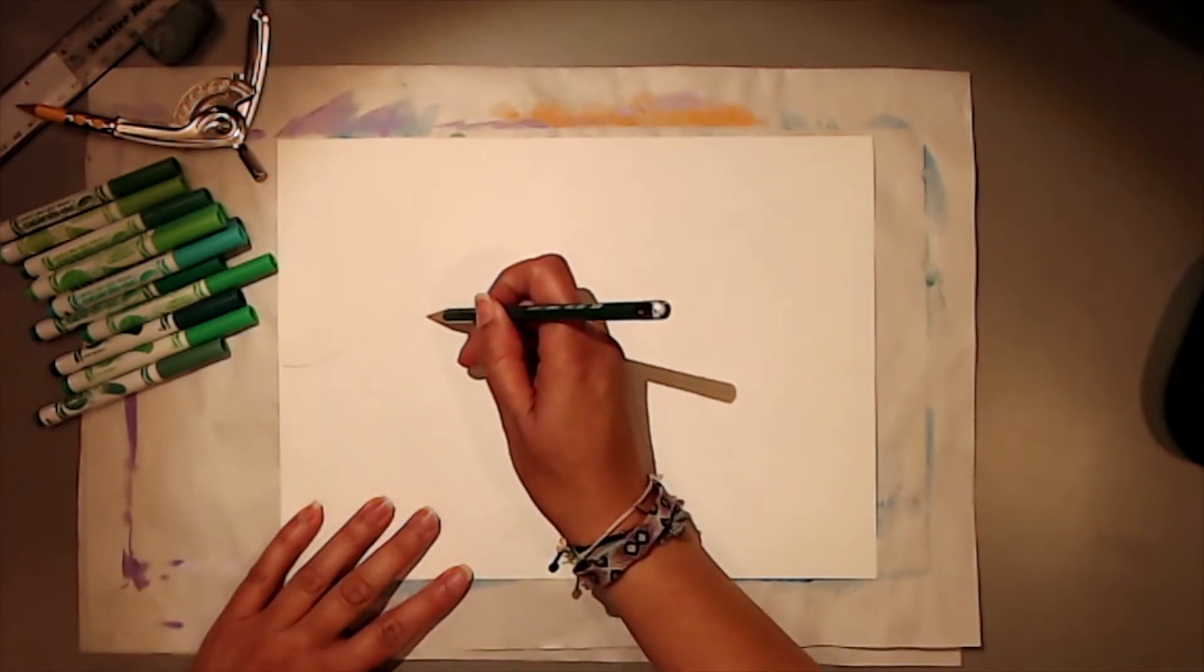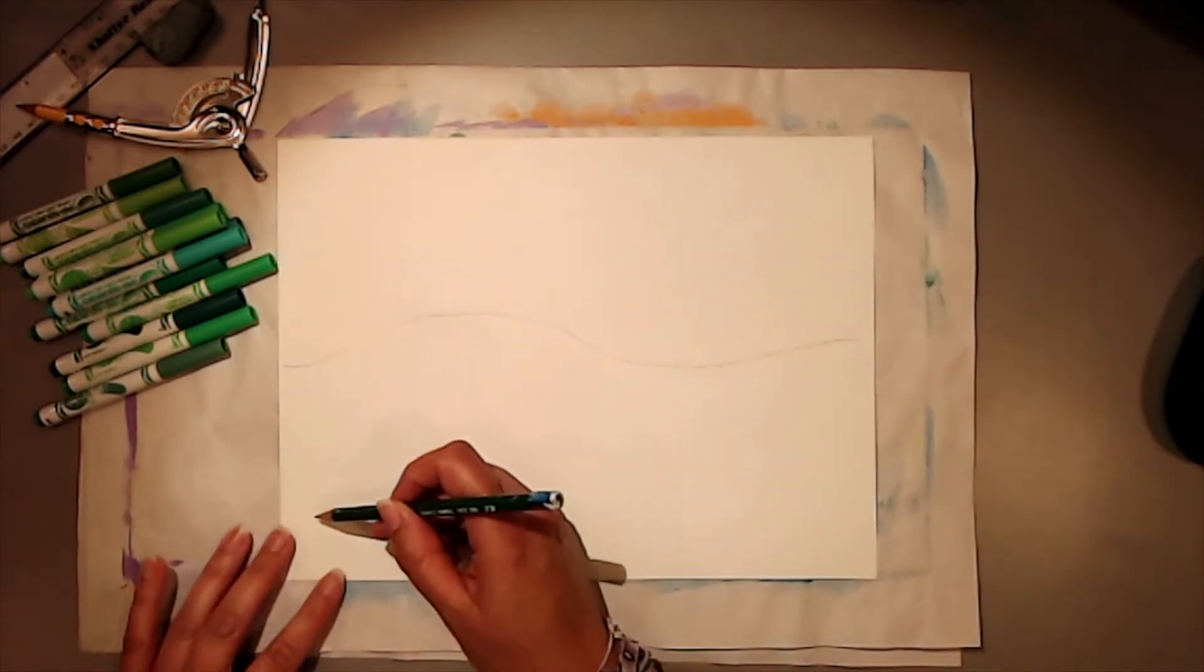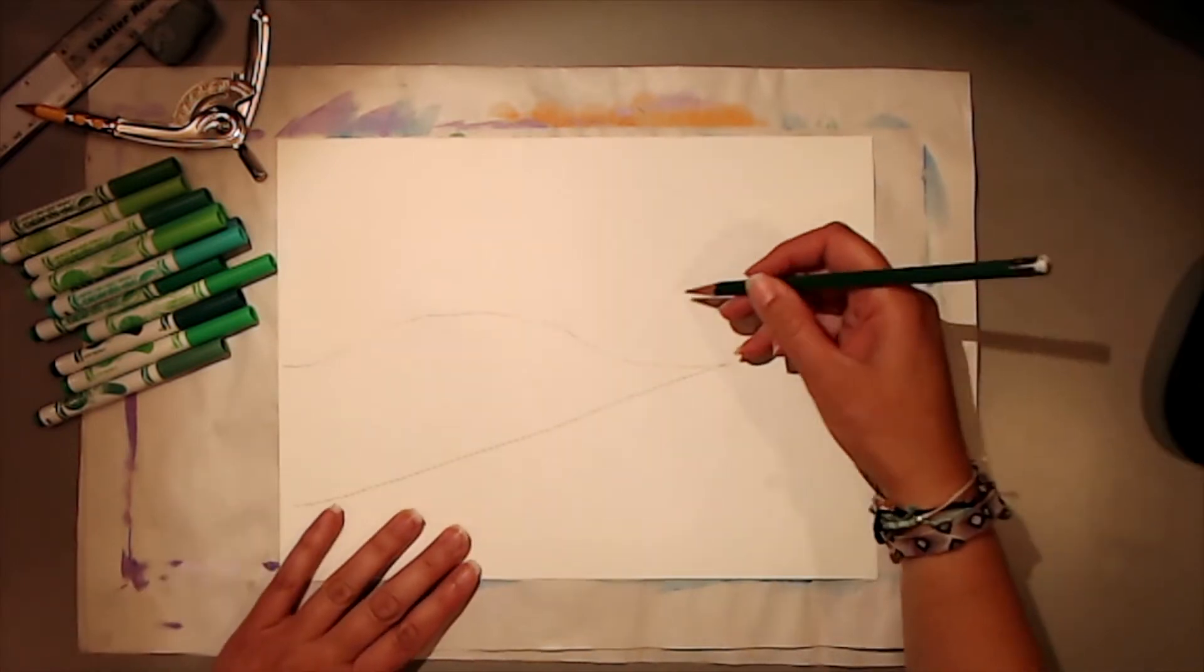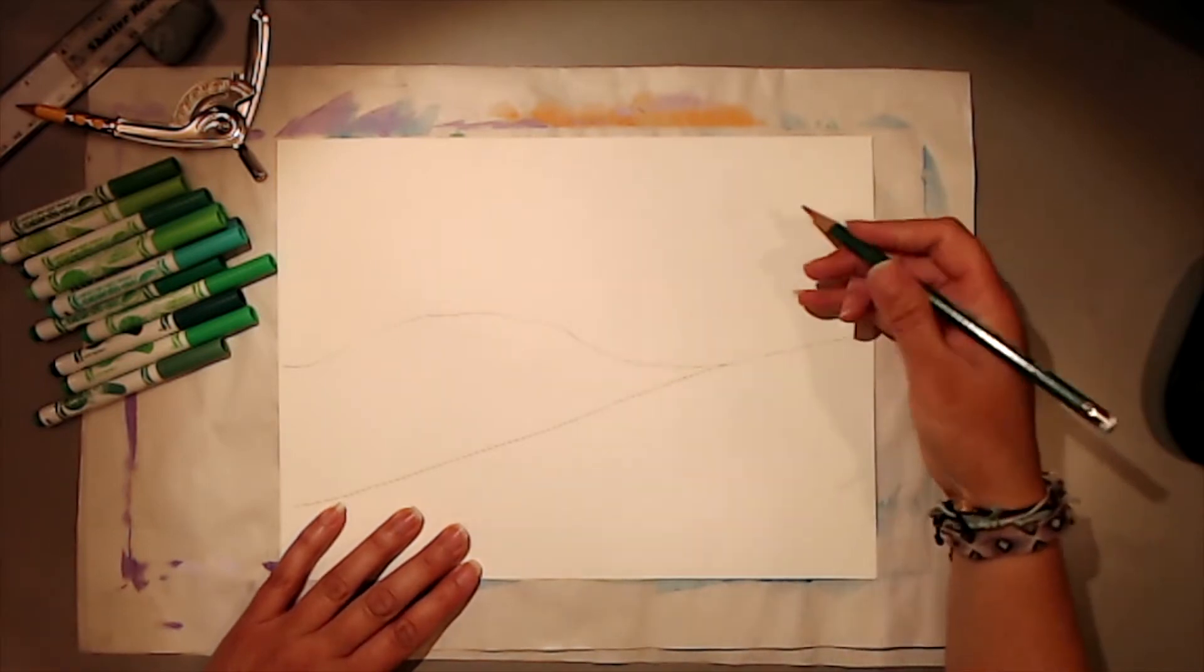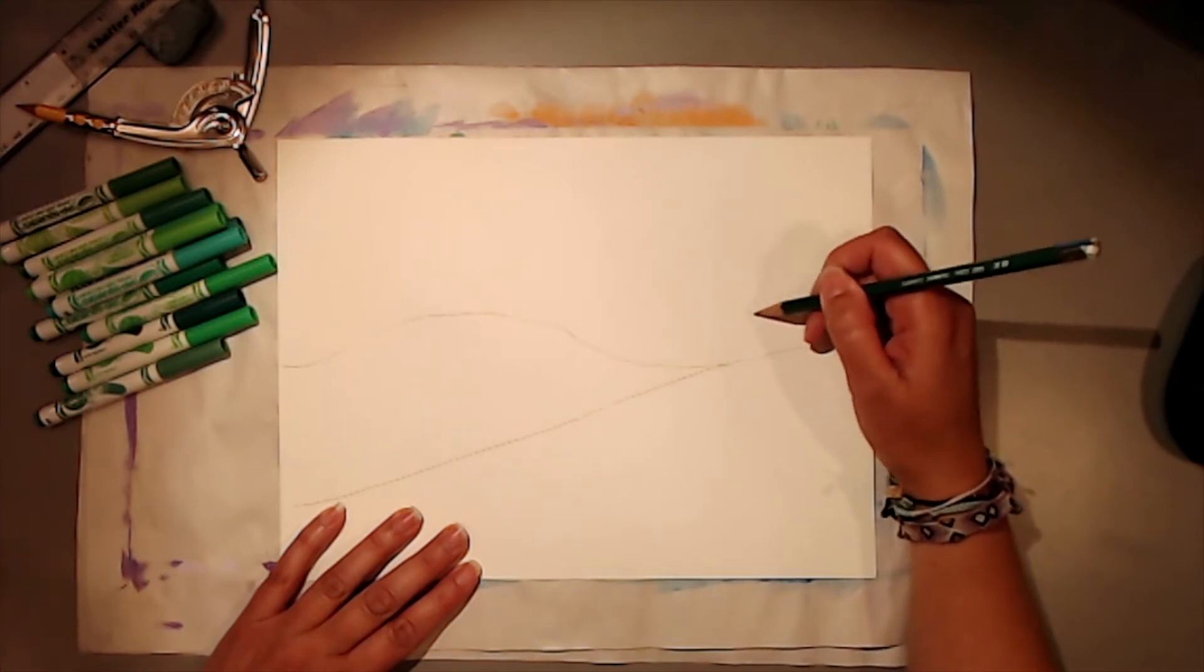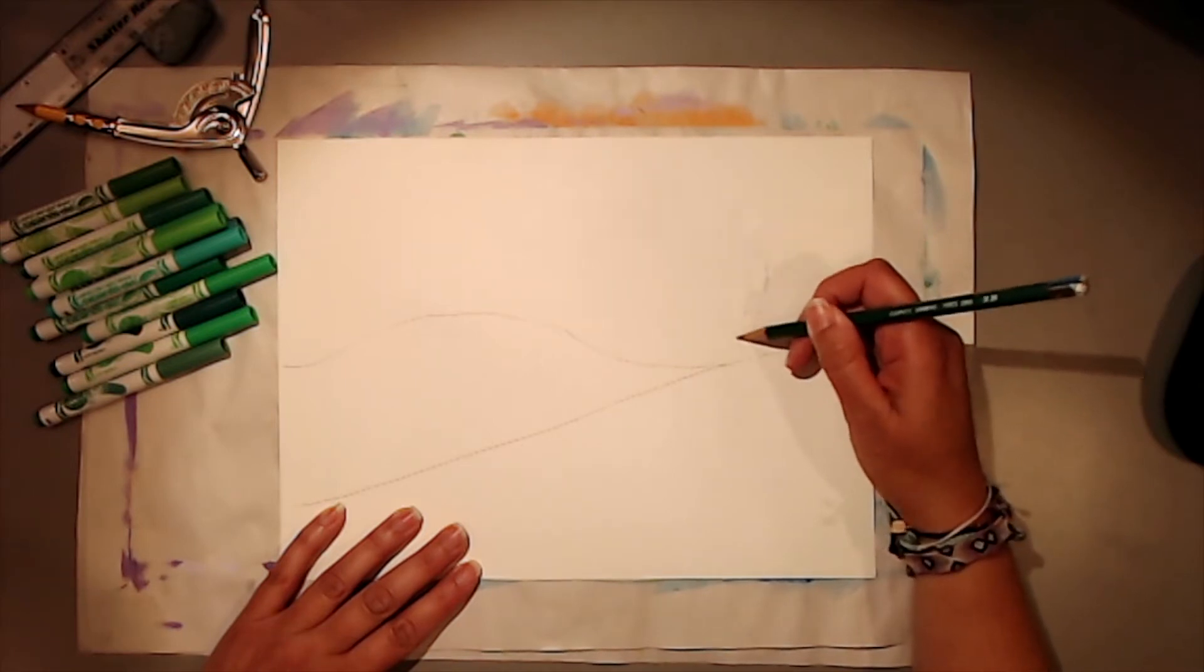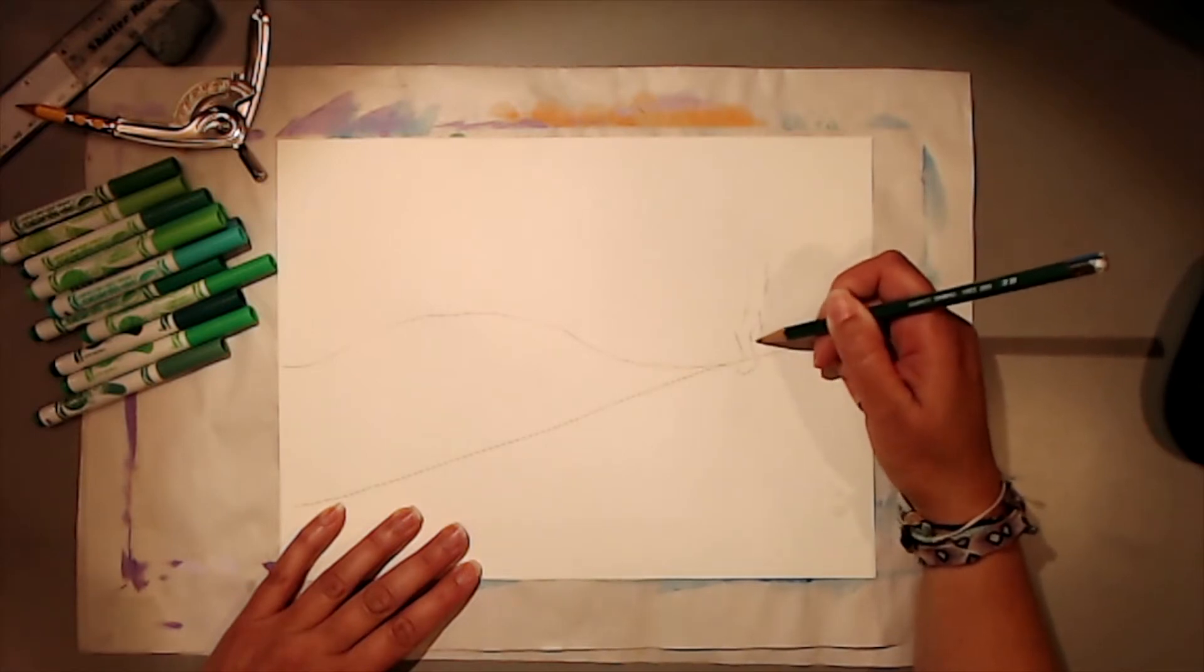So I'm going to lightly draw some mountains like what I saw that day. And then I'm going to draw myself in a silhouette. So just the outline of my body. I'm going to start by sketching my body. And then I can make my sketch a little more detailed.